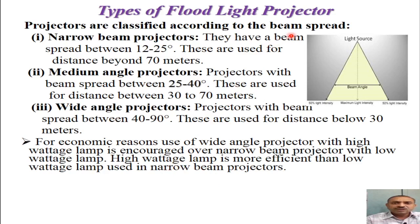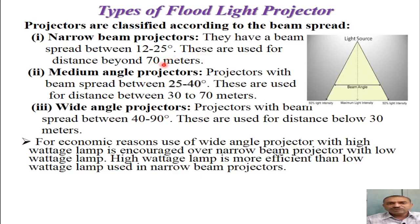There are basically three types of projectors used in flood lighting. First, narrow beam projectors produce a beam angle in the range of 12 to 25 degrees. The center of the beam gives maximum illumination intensity, falling to 50 percent at the two extremes. Narrow beam projectors are used for distances above 70 meters to illuminate a given surface. Second, medium angle projectors have a beam angle from about 25 degrees up to 40 degrees, and are used at distances from 30 to 70 meters.